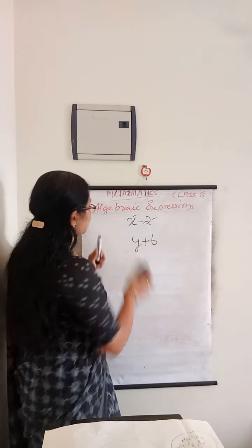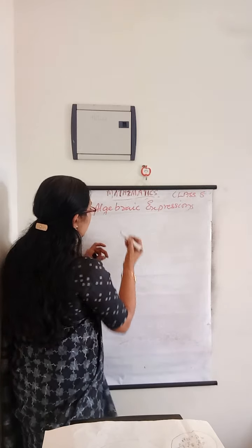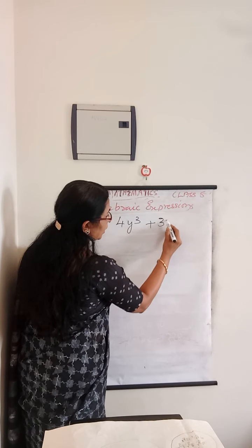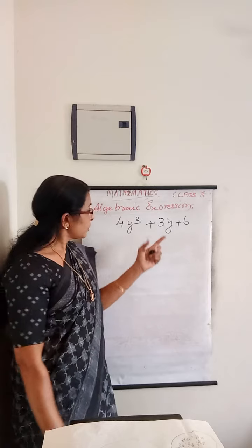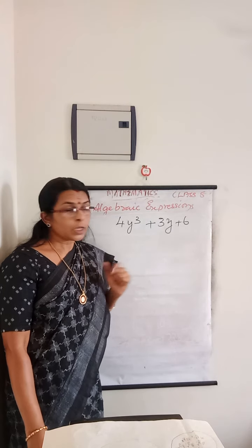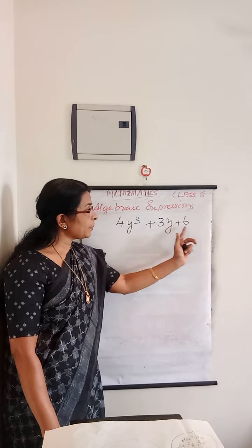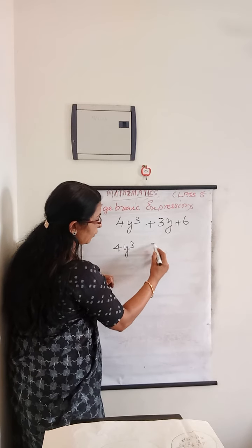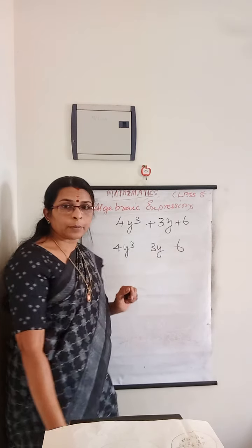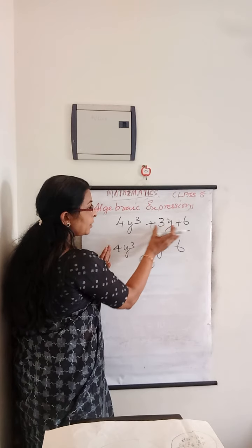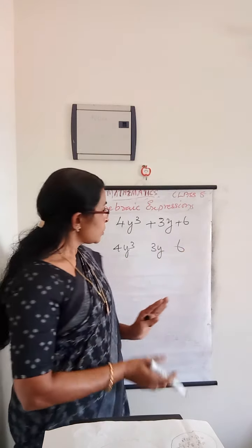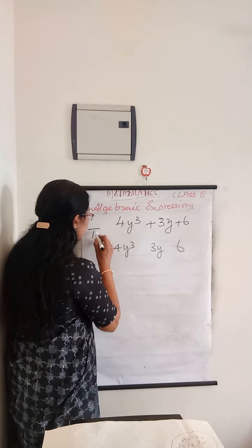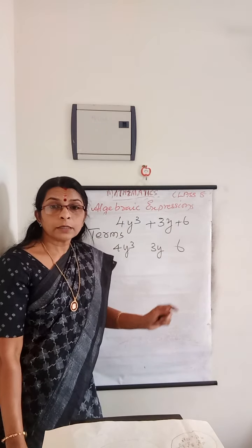Now let us consider an algebraic expression: 4y cube plus 3y plus 6. This is an example of an algebraic expression. This expression has different parts — 4y cube is one part, 3y is another part, and 6 is another part. These parts are combined with operators. Each of these parts are called terms — terms of the expression.